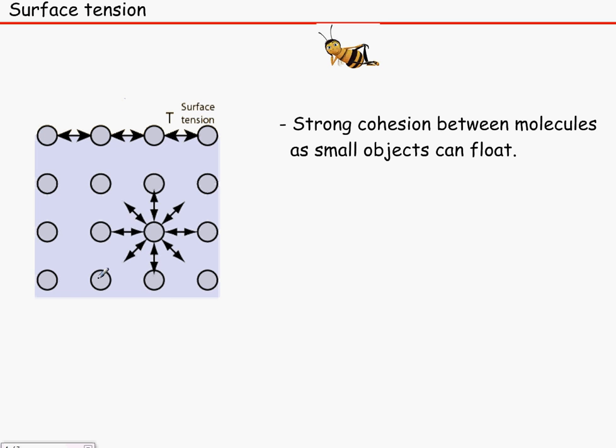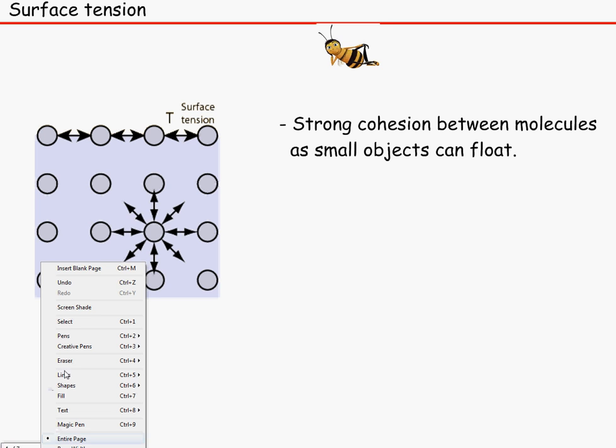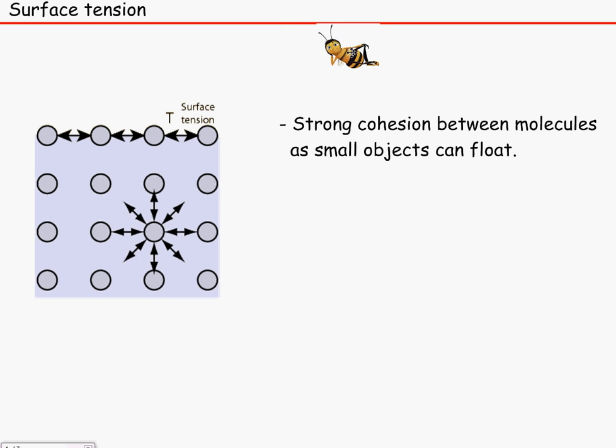So that's why when you slap water, it kind of hurts, you know. So if this bee just decides to go all the way down onto the water, it will not be able to have the amount of energy required to break these bonds. And therefore, it just floats on top of the water.